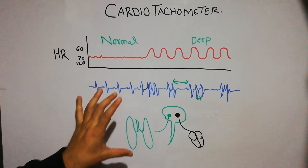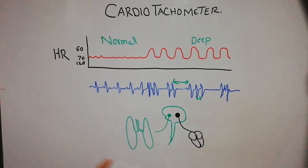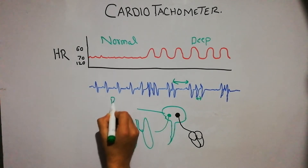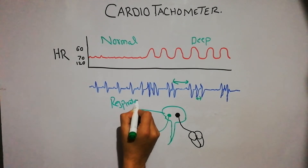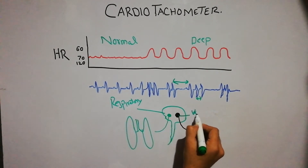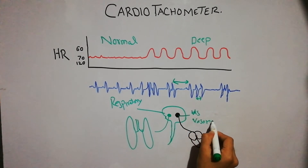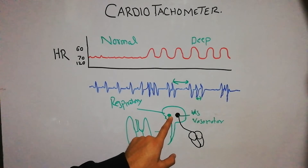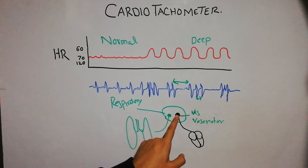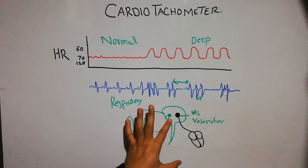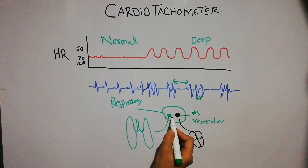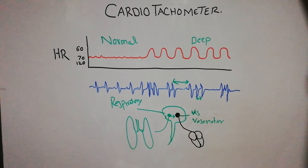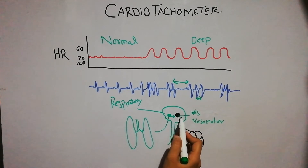It's because there are two centers in the human brain: one is the respiratory center and one is the vasomotor center. When normal breathing is occurring, there is no spillover of impulses from the respiratory center towards the vasomotor center. But during deep breathing, there is spillover of impulses from the respiratory center to the vasomotor center, which is basically supplying the heart.